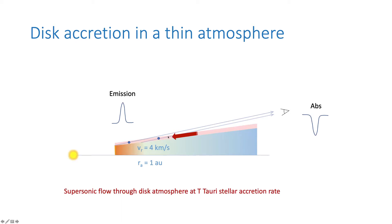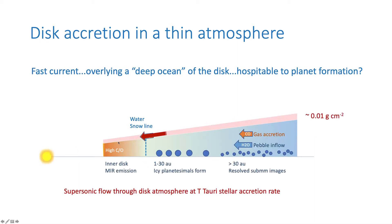It's just like looking at the disk atmosphere that, if viewed from above, would produce emission, but here we're looking at it almost edge-on, so we see it in absorption. With these supersonic velocities, if you calculate the accretion rate, it's the T Tauri accretion rate. So the material that eventually makes its way onto the star seems to be transported through the tiny disk atmosphere — a fast surface current — leaving behind a deep ocean of quiescent material that's very hospitable to planet formation. A little new insight that comes from just taking a spectrum and seeing what's there.